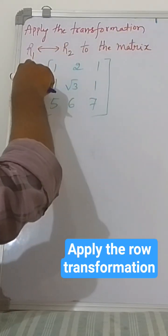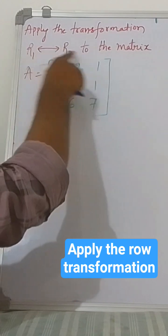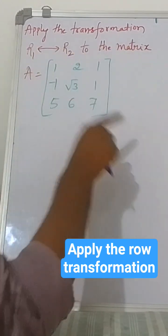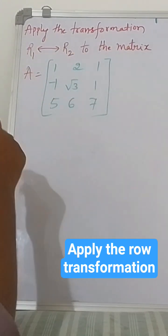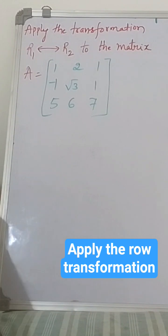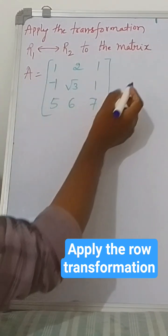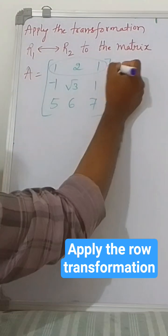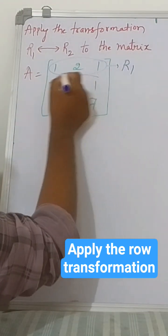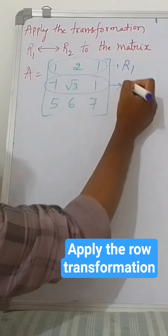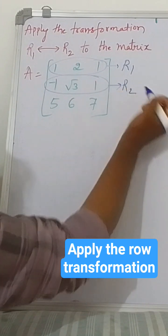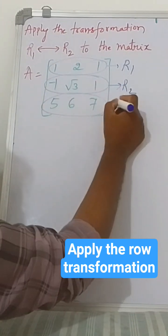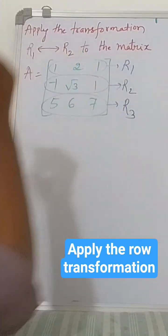Apply the transformation r1↔r2 to the matrix. First, what is r1, r2? See, this is row 1 so we'll write r1, this is row 2 we'll write r2, this is row 3 so we'll write r3.